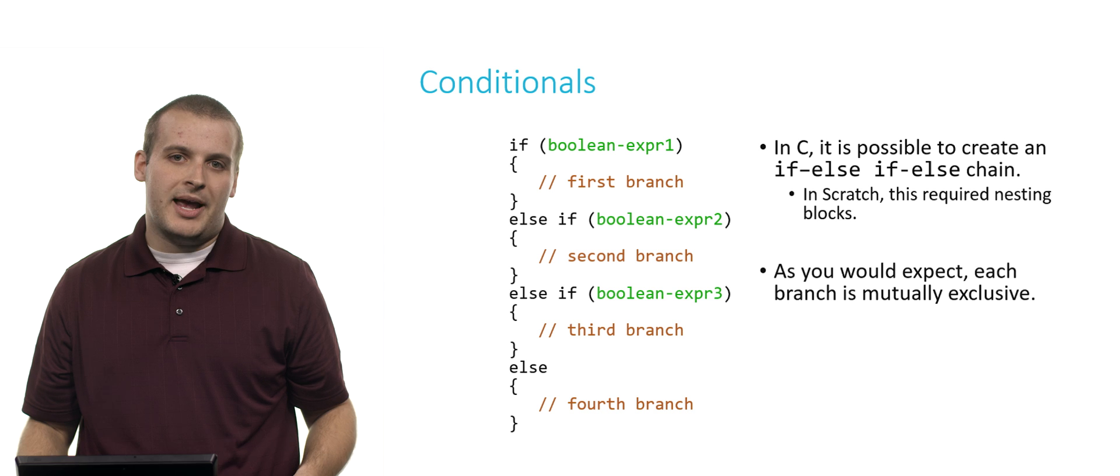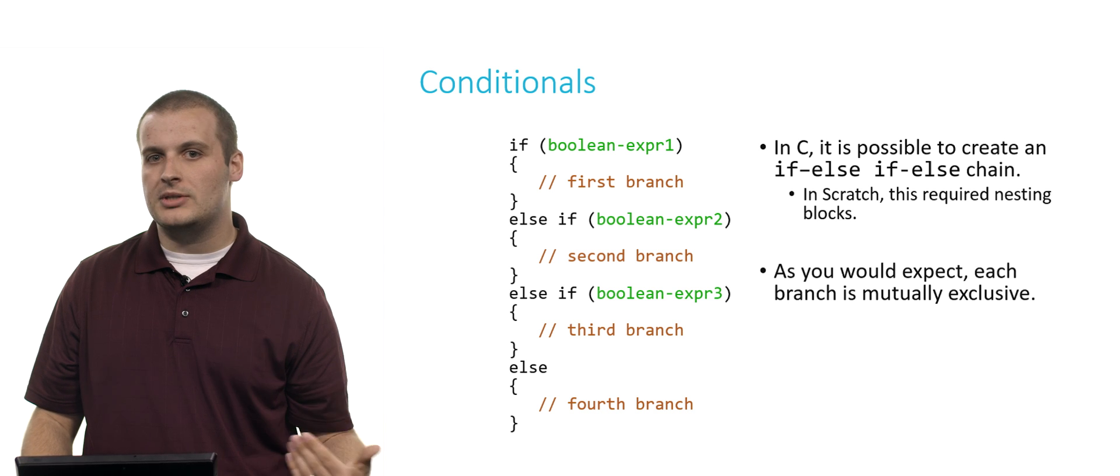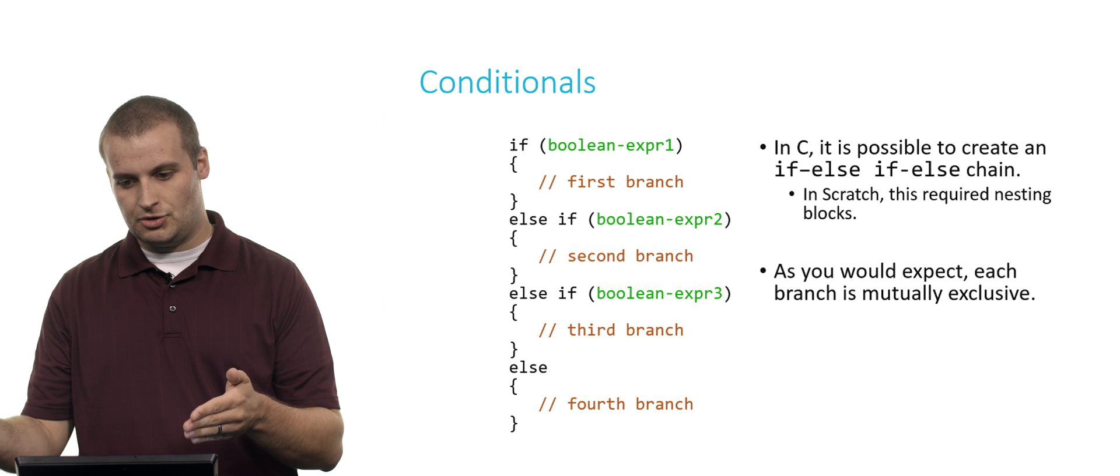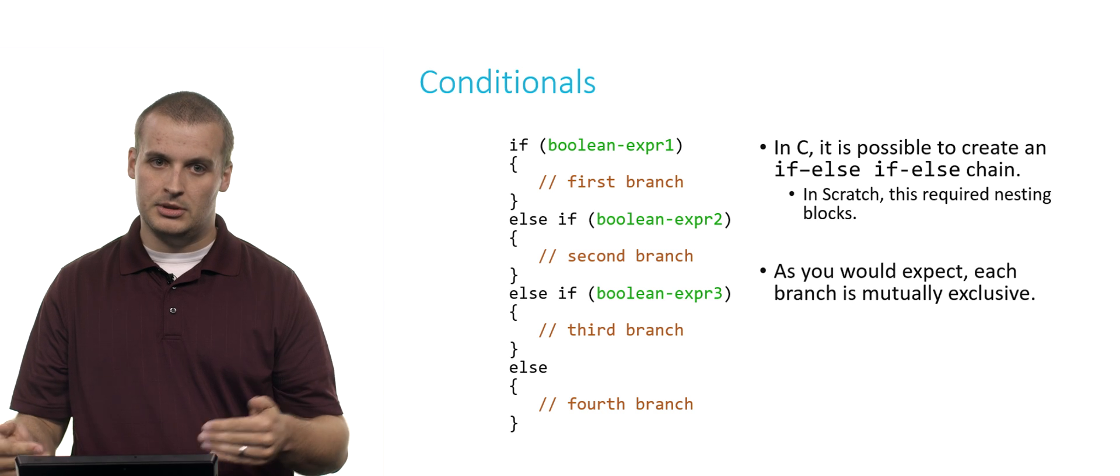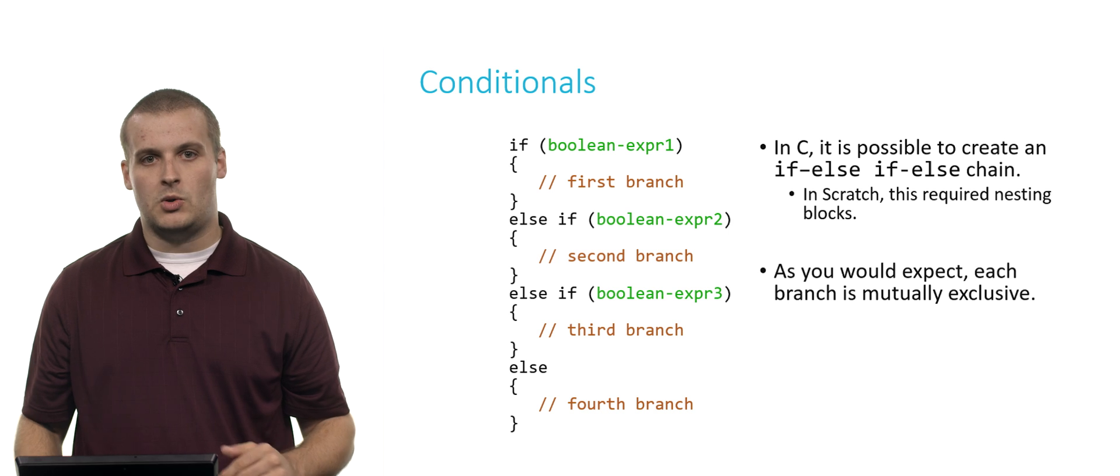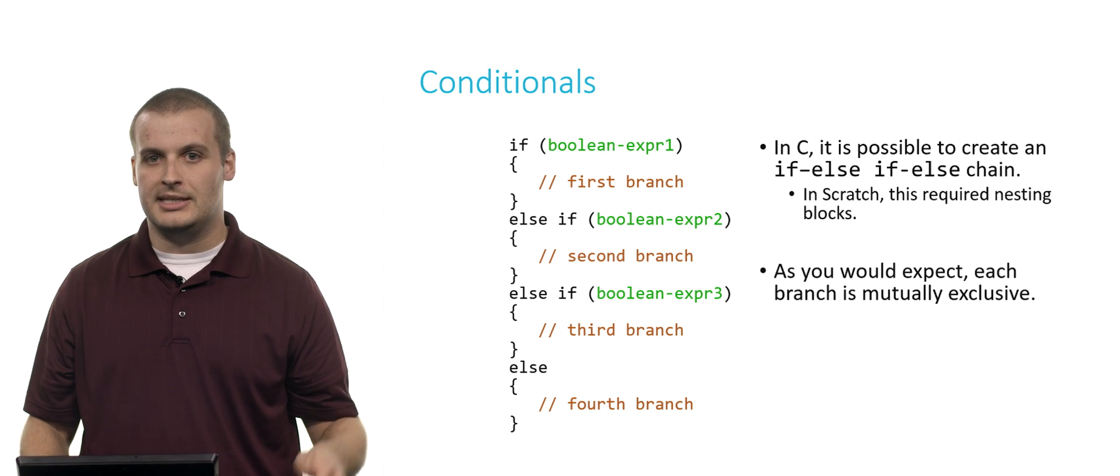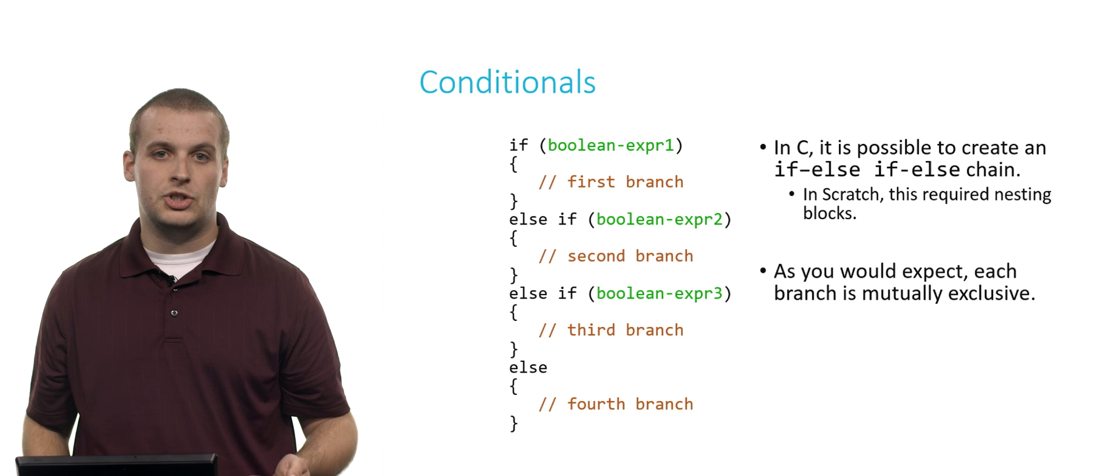Again, as you might expect, all of these branches are mutually exclusive. You can only ever go down one of the branches. If this is true, otherwise if this is true, otherwise if this is true, otherwise do this. So all four of the branches in this example are mutually exclusive. It's an if-else-if-else chain.